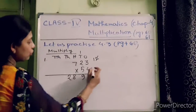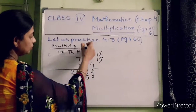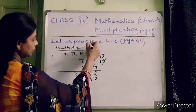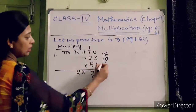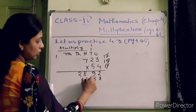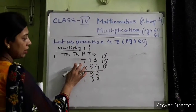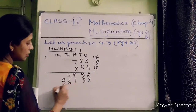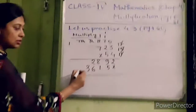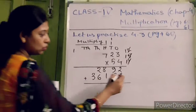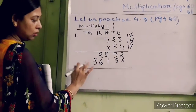Five into three is fifteen — cut five and write here, put one on the tens place. Five into two is ten, plus one is eleven — again cut one and put one on the hundreds place. Five into seven is thirty-five, thirty-six.